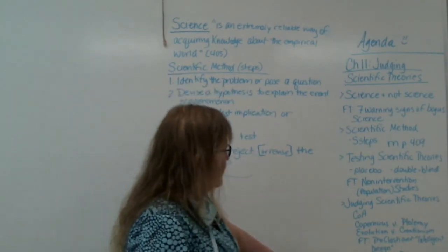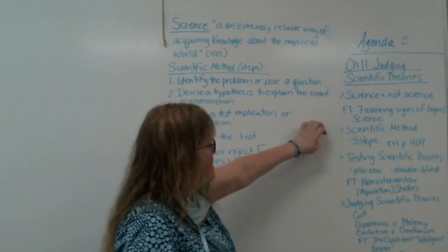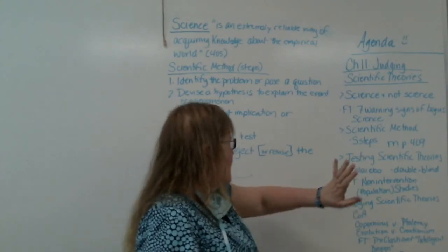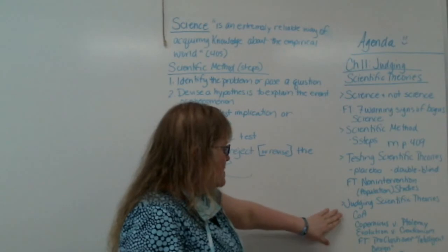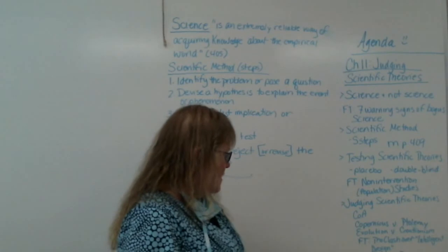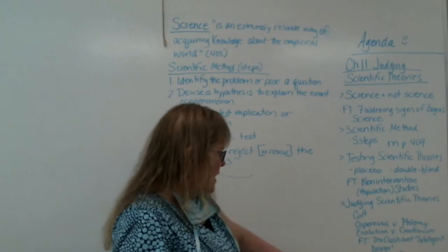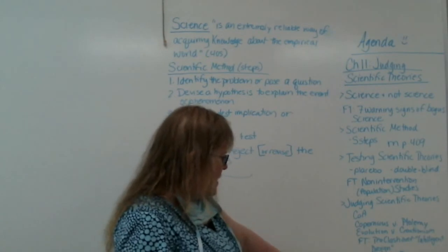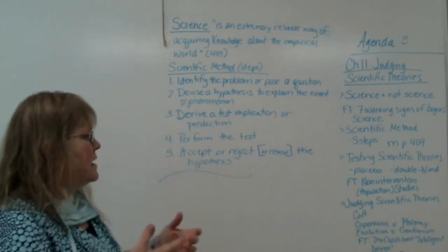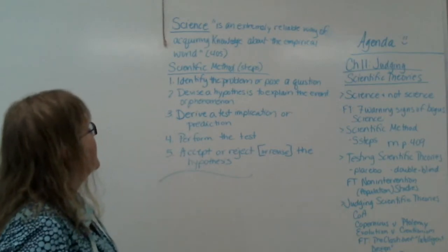Here's what we're going to walk through: Science and Not Science, 7 or 8 Signs of Bogus Science, The Scientific Method, Testing Scientific Theories, Placebos and Double Blinds and all that, Judging Scientific Theories using the Criteria of Adequacy with some examples, Science and Weird Theories - why should we care, why we do those things, and then how we judge them. That's Chapter 11. It's not nearly as complex as some of the other ones, so we might not take as long today.